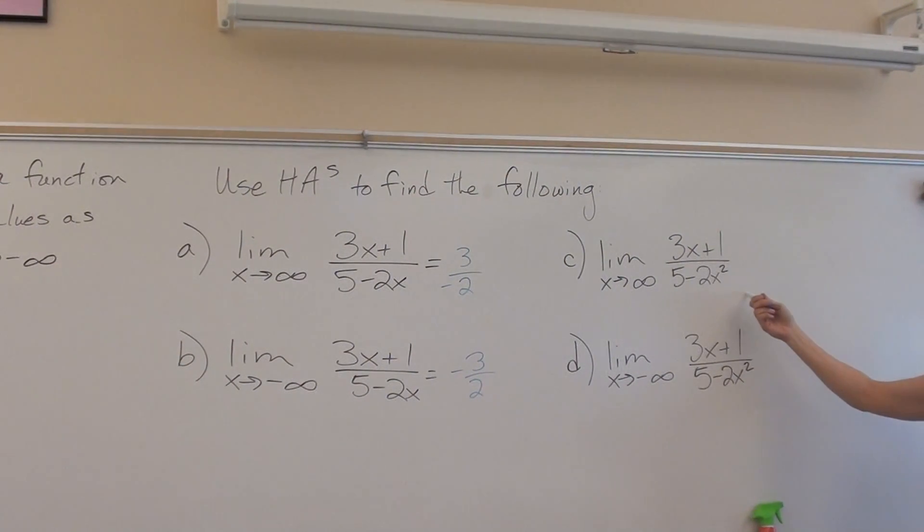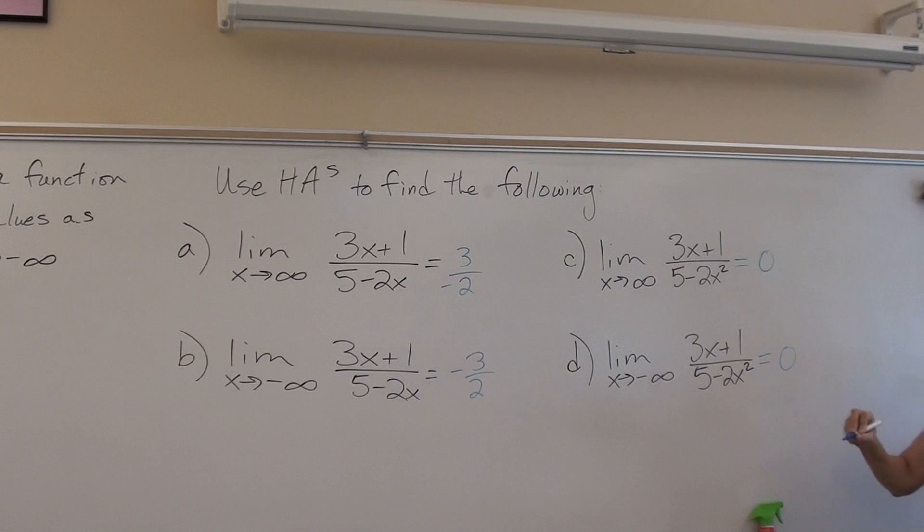Here we have the limit as x approaches infinity. Is the top bigger or are they the same or is the bottom bigger? Bottom bigger. So what is the limit? Zero. Bottom bigger is zero. Now, you don't write y equals zero. We're not asking for the equation of the horizontal asymptote. We're just asking for the value of the limit, which is just the number zero. Are there questions on those? So that's a lot of your homework tonight.